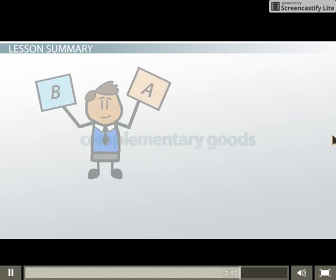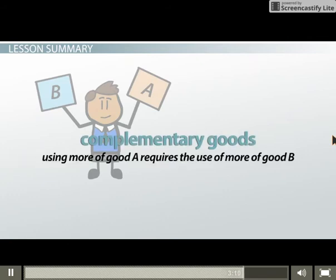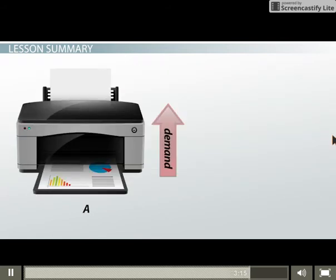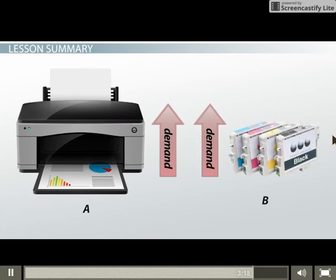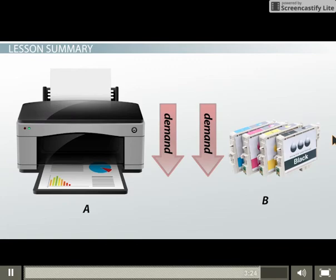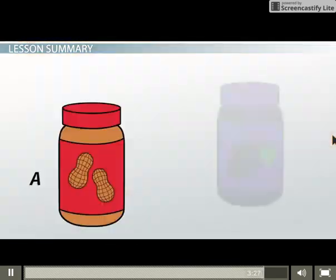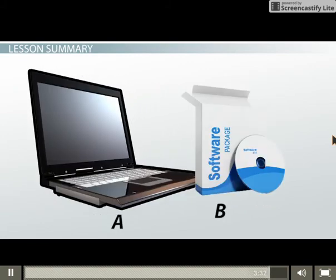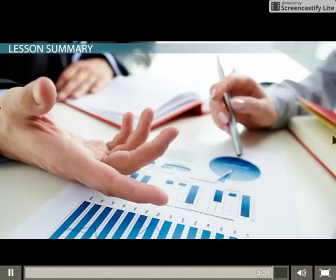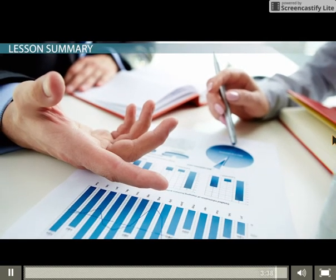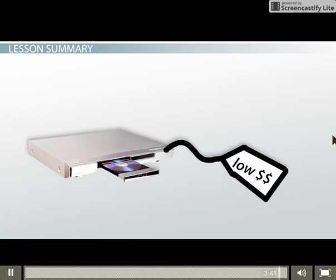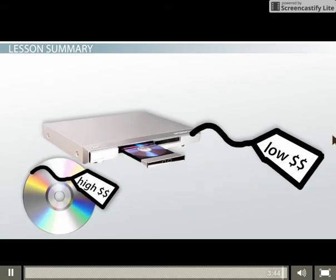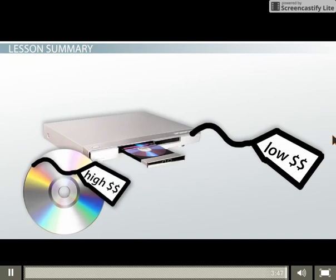To summarize: two goods, A and B, are complementary if using more of good A requires the use of more of good B. As the quantity demanded for good A increases, so does the demand for good B. On the flip side, as fewer people want good A, the demand for good B will also go down. Examples of complementary goods include peanut butter and jelly and computer hardware and software — when you buy one, you usually buy the other. Companies love to have complementary goods and use strategies such as discounting the base item, like a DVD player, and then charging more for the complementary goods, such as DVDs and wiring cables.